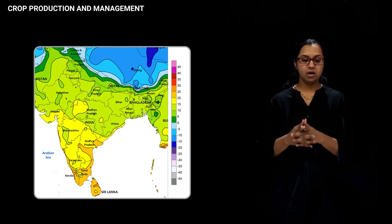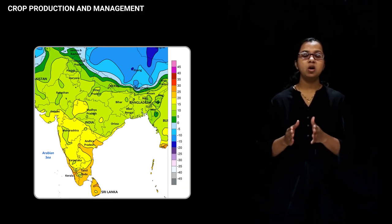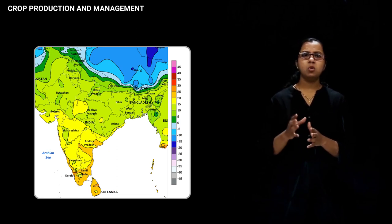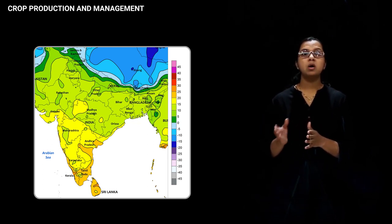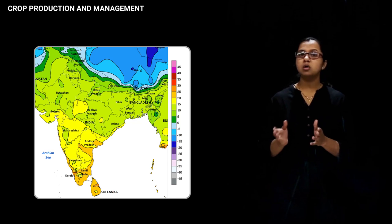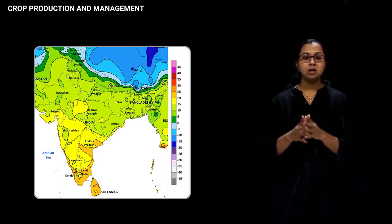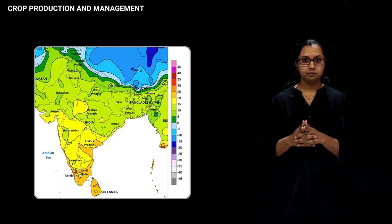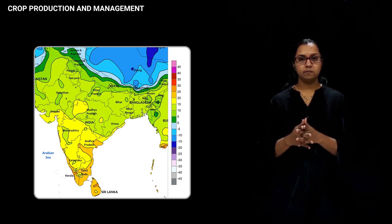In India, the climatic conditions and the quality of soil differs from place to place. There are small patches of land in which the soil quality differs a lot, and hence the vegetation cover on this soil also differs. India majorly falls under the tropical zone of climate, and hence there is untimely rainfall and the climatic conditions also differ a lot.